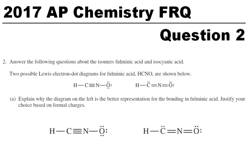I'm going to go over question 2 from the 2017 AP exam FRQs. The first one says answer the following questions about the isomers fulminic acid and isocyanic acid. We don't have to understand anything about what those chemicals really are. We're going to look at their structures.